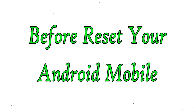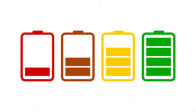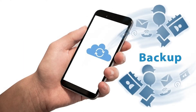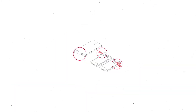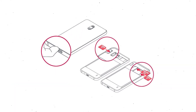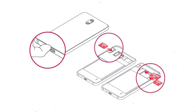Before resetting your mobile, make sure the battery is properly charged. If less than 50%, charge your mobile. You need to make sure that the data on your device is backed up so you do not lose valuable photos or documents. Reset deletes all your mobile data, so you better back up all important data and remove SIMs and SD card.